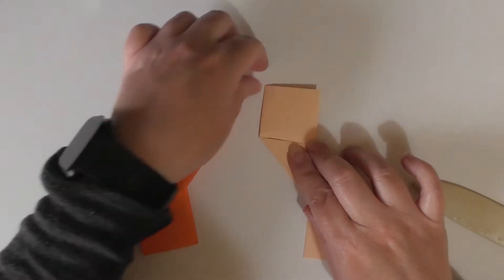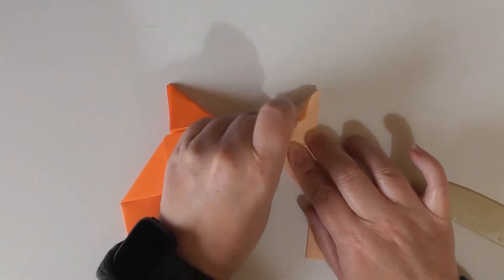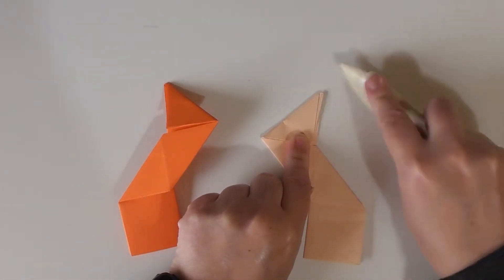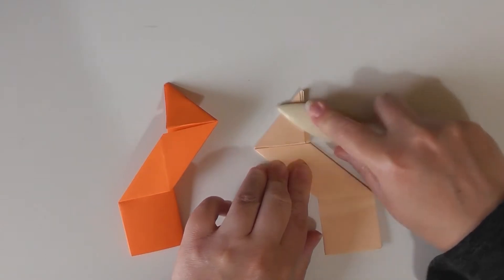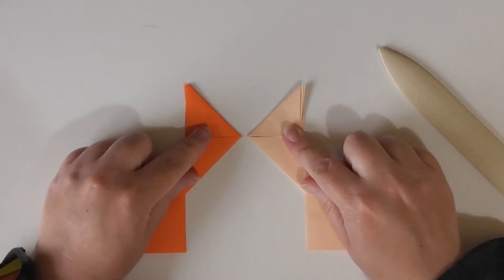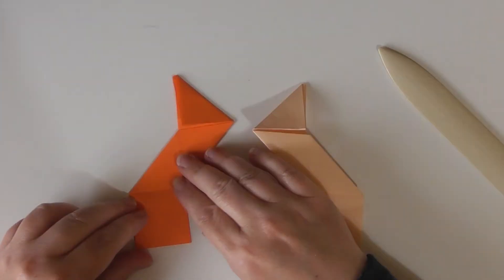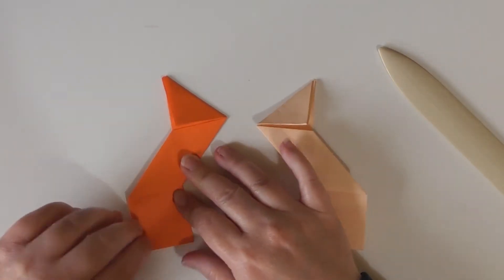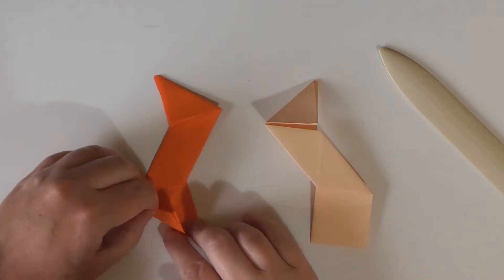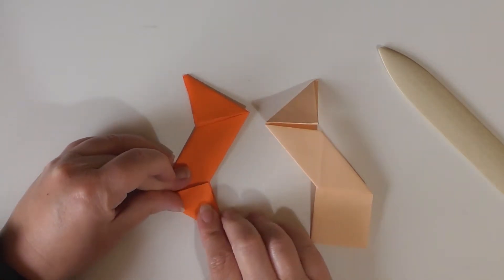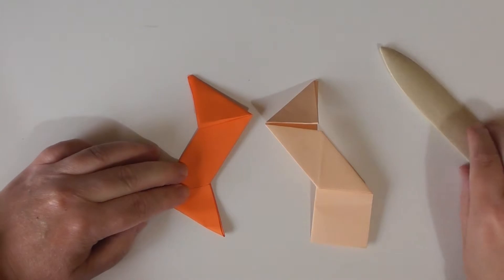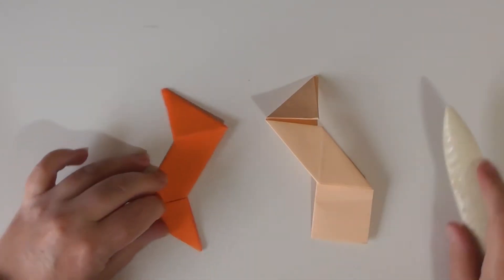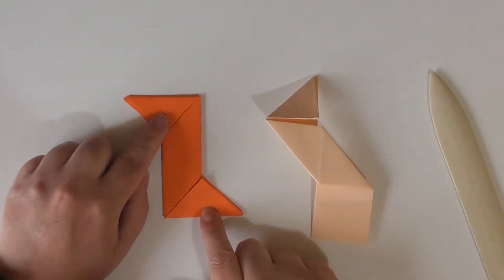So as we folded that one that way, we need to fold this one the opposite way. Put it there now like that. And then we're going to do the same this way. So we're going to fold that down. Oh, that way round.